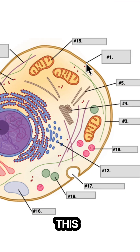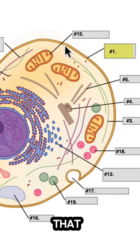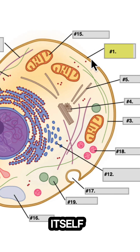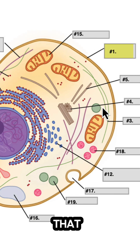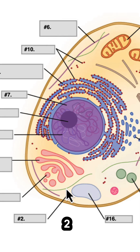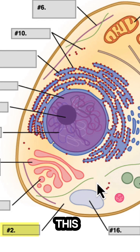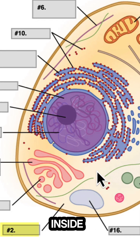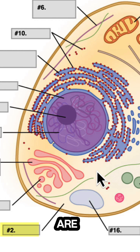Number one: this is the region that defines the cell itself, goes all the way around — name that. Number two is all of this yellow material inside; that's the soup of the cell where all the organelles are floating.